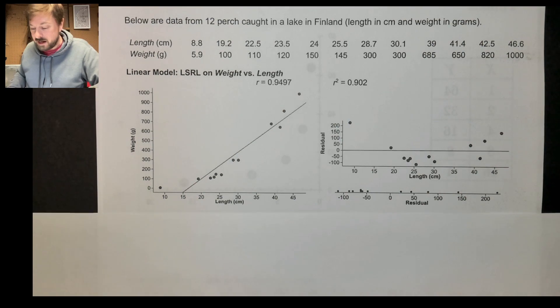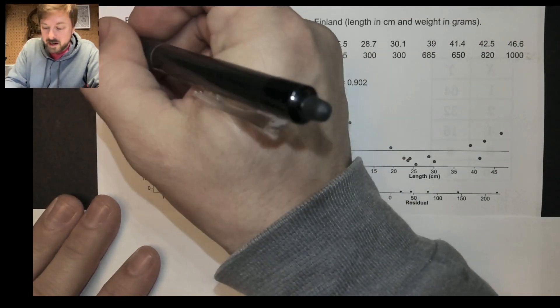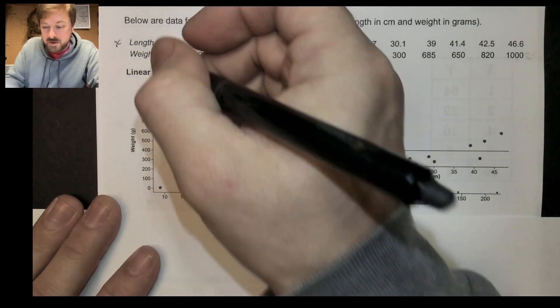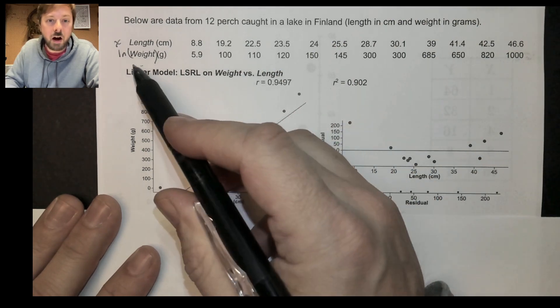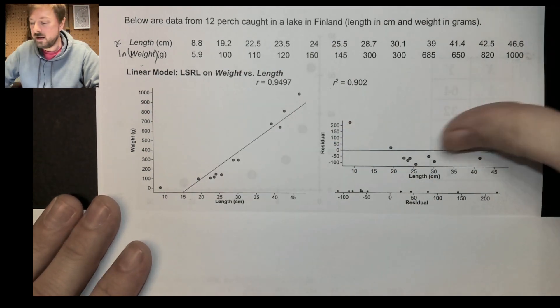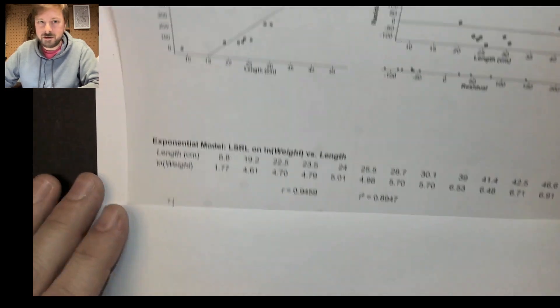How do we make an exponential? Well, to make an exponential, remember, we'll keep our x variable the way it is, right? But then we'll take the natural log or the log base whatever we want of our y variable. So let's do that. All right, natural log all the weights. Well, I did that.